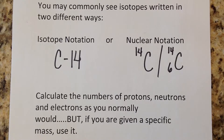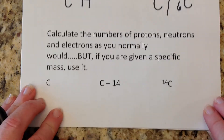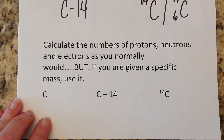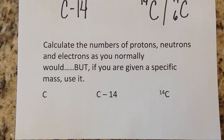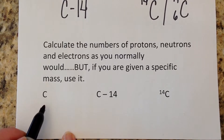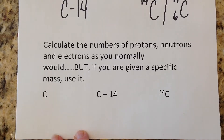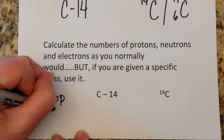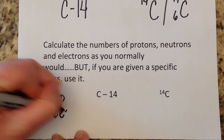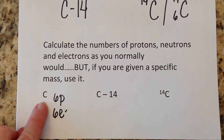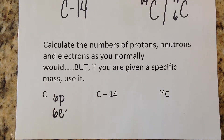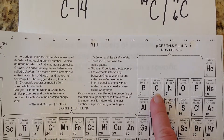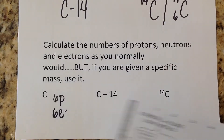We will calculate the number of protons, neutrons, and electrons as we normally would. If they give you a mass, use it. For example, plain old carbon has an atomic number of 6, meaning it has 6 protons and 6 electrons if it is electrically neutral. Since no specific isotope is given, we look at the periodic table and use the mass of carbon, which is 12.01, so we round it to 12.